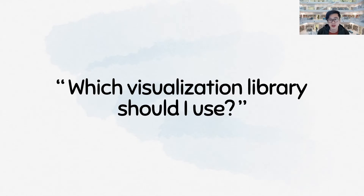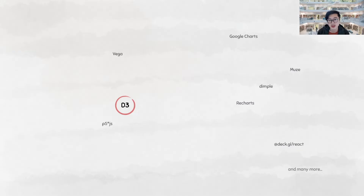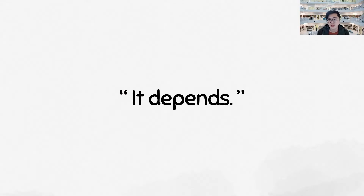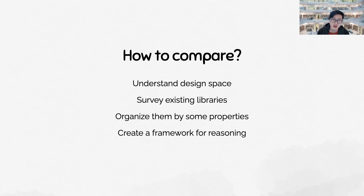Every once in a while, somebody will ask me which visualization library should I use? It is a simple yet difficult question. Almost everyone has heard of D3, of course, but what about the others? There are so many options offering different things. So a lot of the time the answer was "it depends," because typically making this decision is not about whether one library is better than another, but whether that library is more suitable for the person and task. However, I wanted a better way to compare these libraries. The plan was to understand the design space of libraries, which can be created by organizing existing libraries, giving us a framework for comparing and reasoning.